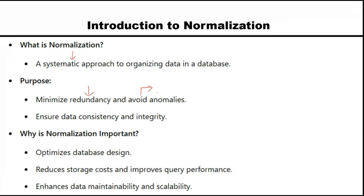There are three kinds of anomalies: insert anomaly, update anomaly, and delete anomaly. All of these anomalies occur due to redundancy and inconsistency. So there are two big villains or enemies of database designers: redundancy and data inconsistency. What we are making sure in normalization is that our data becomes consistent, we remove redundancy, and our integrity is also maintained.